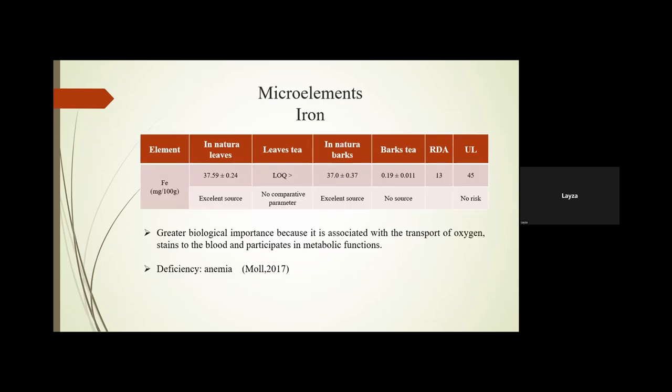For the micro elements — iron is really important, mainly for women, because women lose a lot of blood and have higher rates of anemia. In my state, indigenous women use this plant specifically for anemia deficiency. For the leaf tea, the iron concentration was very low with no comparative parameter. Barks were not a source, but if consumed in natura it is an excellent source. The greatest biological importance of iron is associated with oxygen transport in the blood and its participation in metabolic functions.